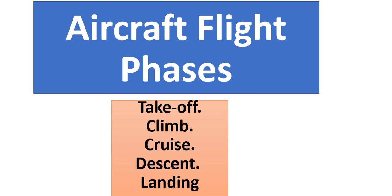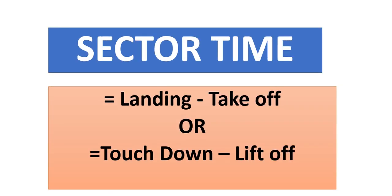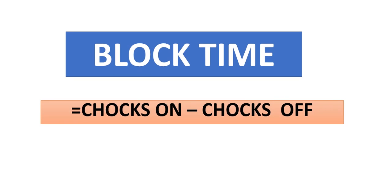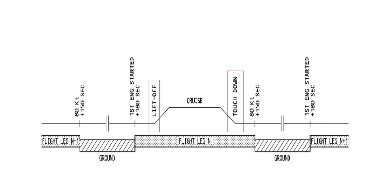After taxiing: takeoff, climb, cruise, descent, landing, taxiing, then stop with shocks on. Looking at the diagram here, sector time equals landing minus takeoff, or touchdown minus liftoff. Here you can see the ground phase — towing and taxiing — then liftoff, climb, cruise, descent, and touchdown.